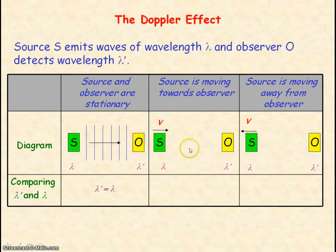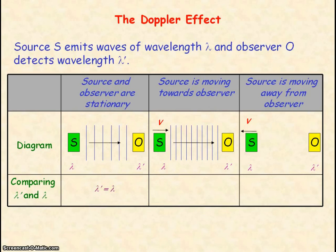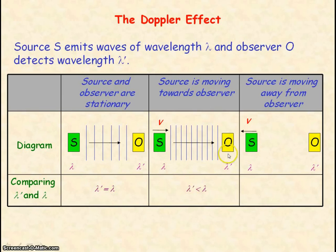If the source of waves is moving towards the observer, the observer will detect a smaller wavelength, so lambda prime will be less than lambda. For the source of waves moving away from the observer, the observer will detect a larger wavelength, so lambda prime will be greater than lambda.